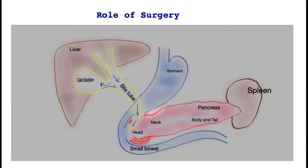Over here is the liver, which is connected to the bile tube that takes bile down into the small bowel. At the side of the bile tube is the gallbladder. The gullet empties into the stomach, which churns the food and passes it into the small bowel, outlined over here. Behind the stomach is the pancreas. Towards the right of the patient is the head of the pancreas, which is the bigger part. Then there is a narrow neck, body, and tail. Towards the tail is the organ spleen, which has a function in immunity.